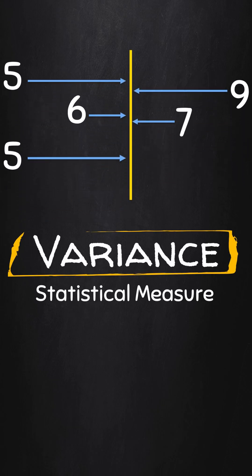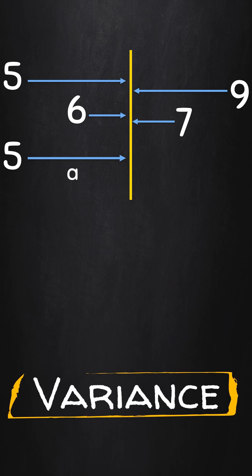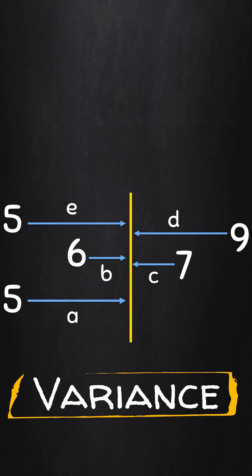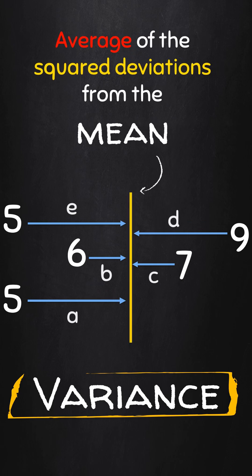The variance is a statistical measure that tells us how far all the numbers in the data set are from the average value of the data set. It is obtained by finding the average of the squared deviations of all data points from the mean of the data.